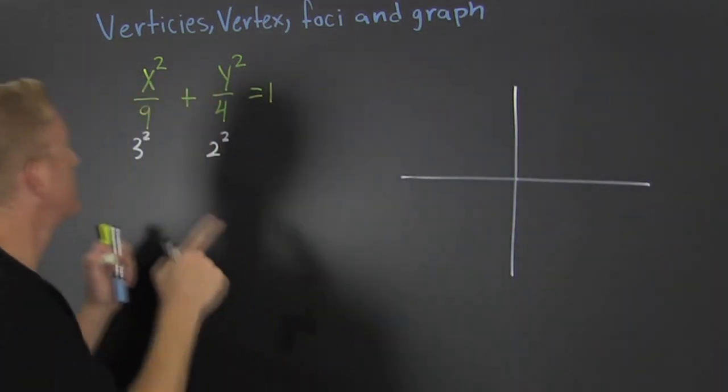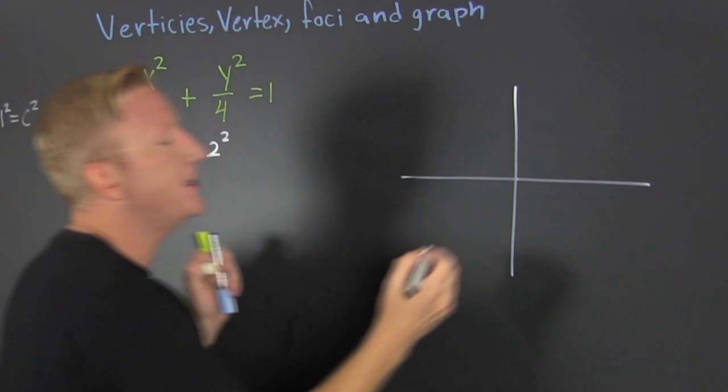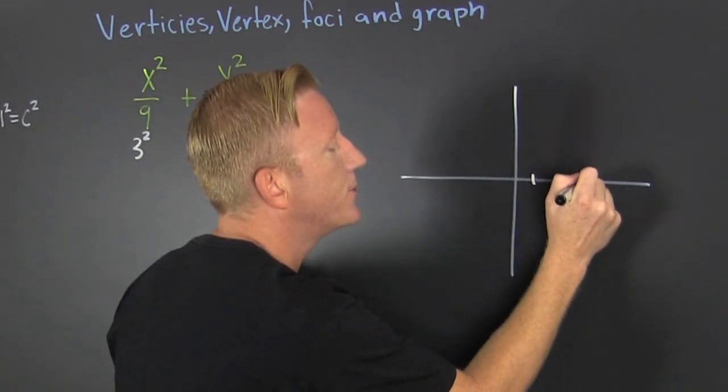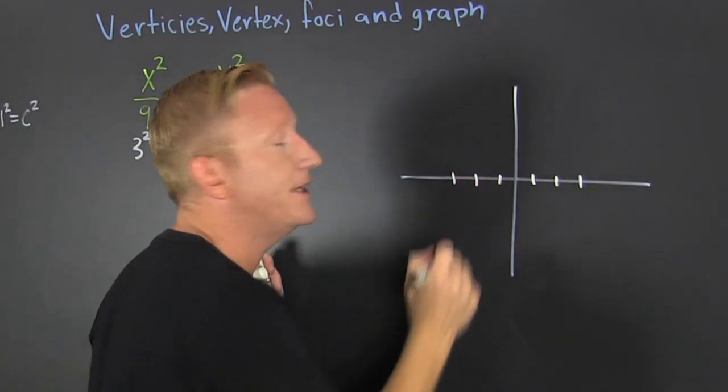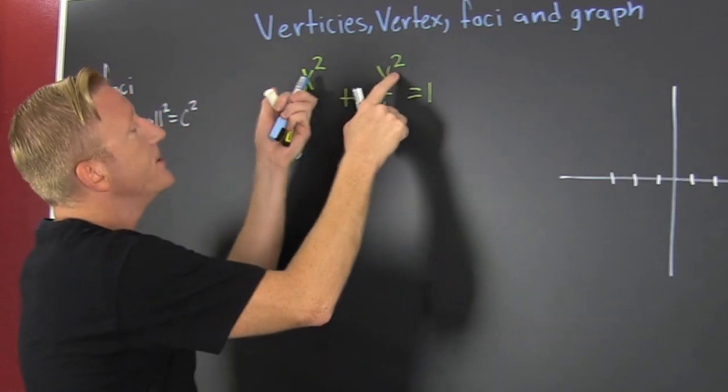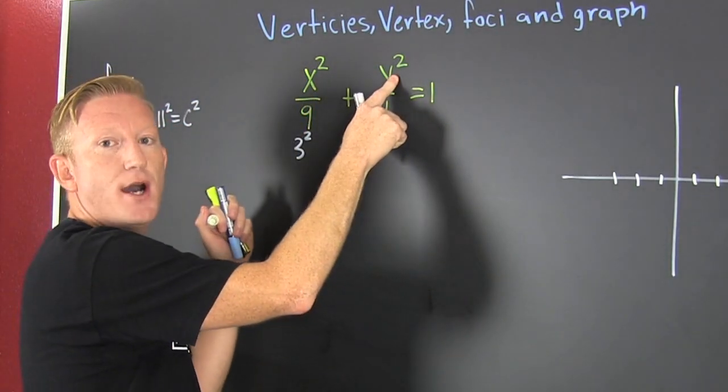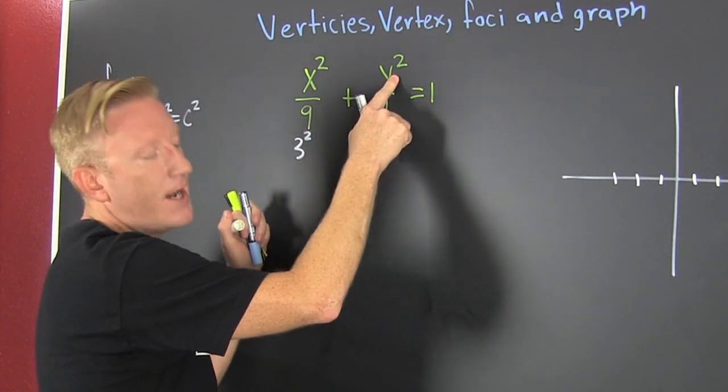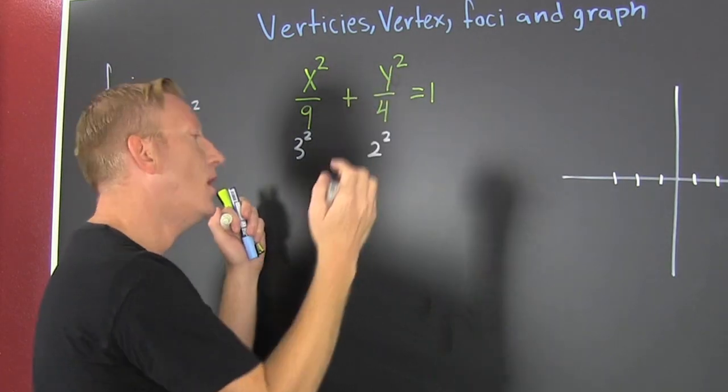What's the number under x? Three. Three in the x direction: one, two, three; one, two, three from center. Now notice there's nothing added or subtracted from these y's or x's, that's why my center is at zero.